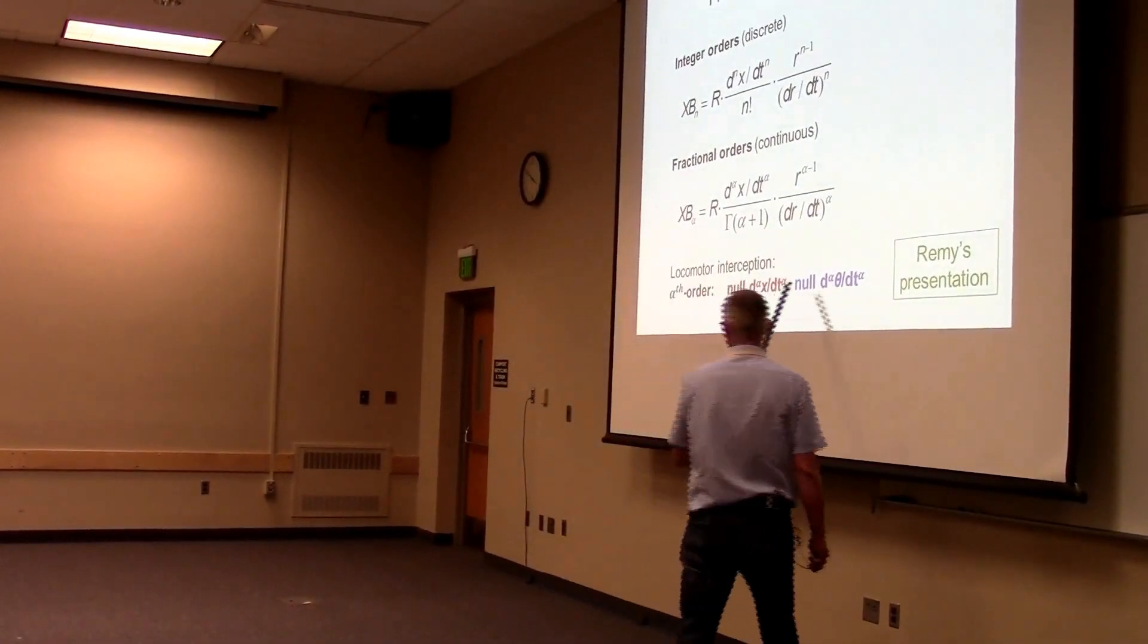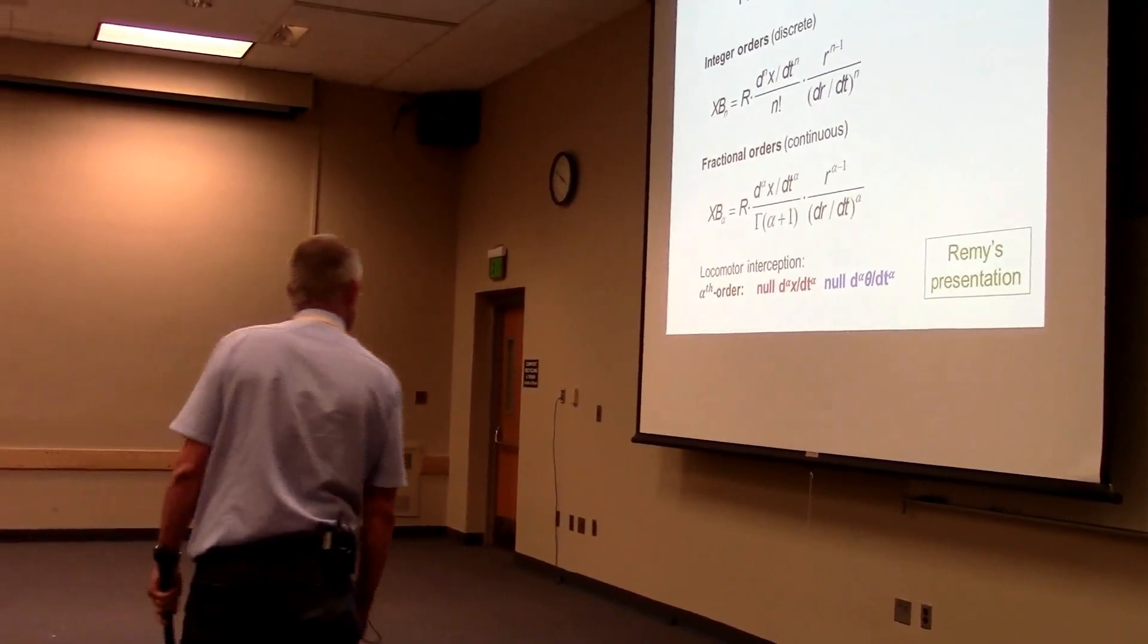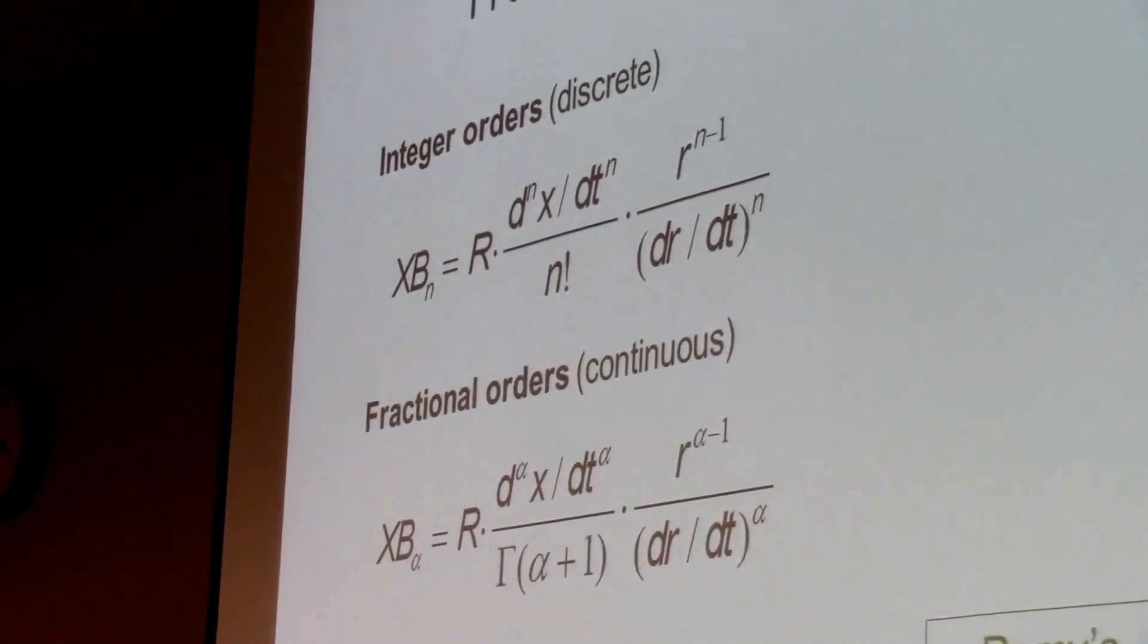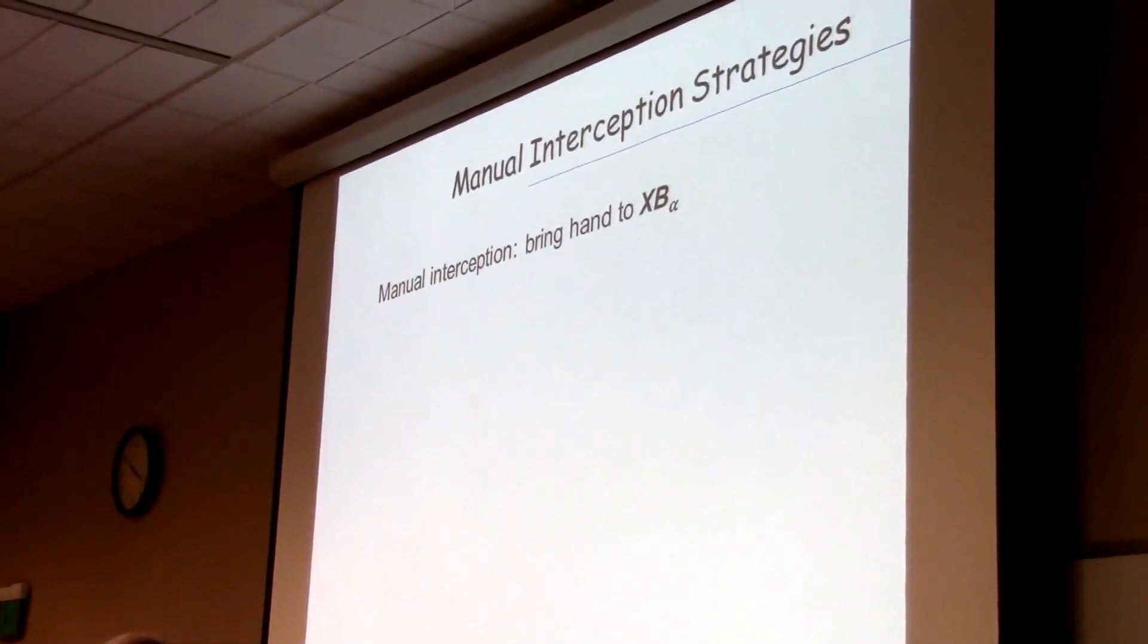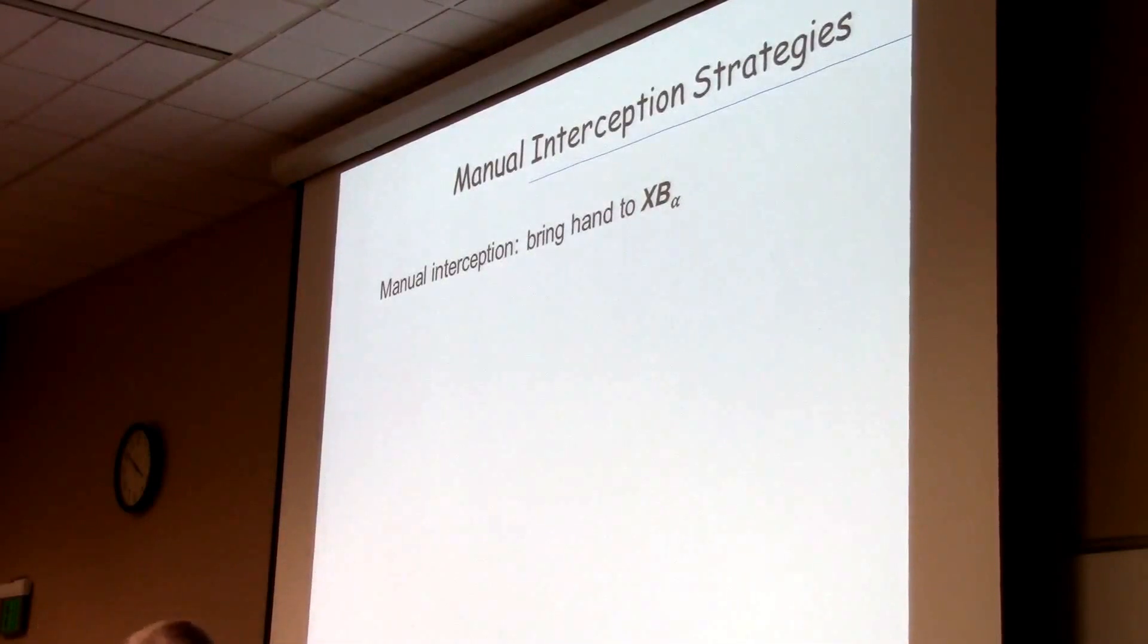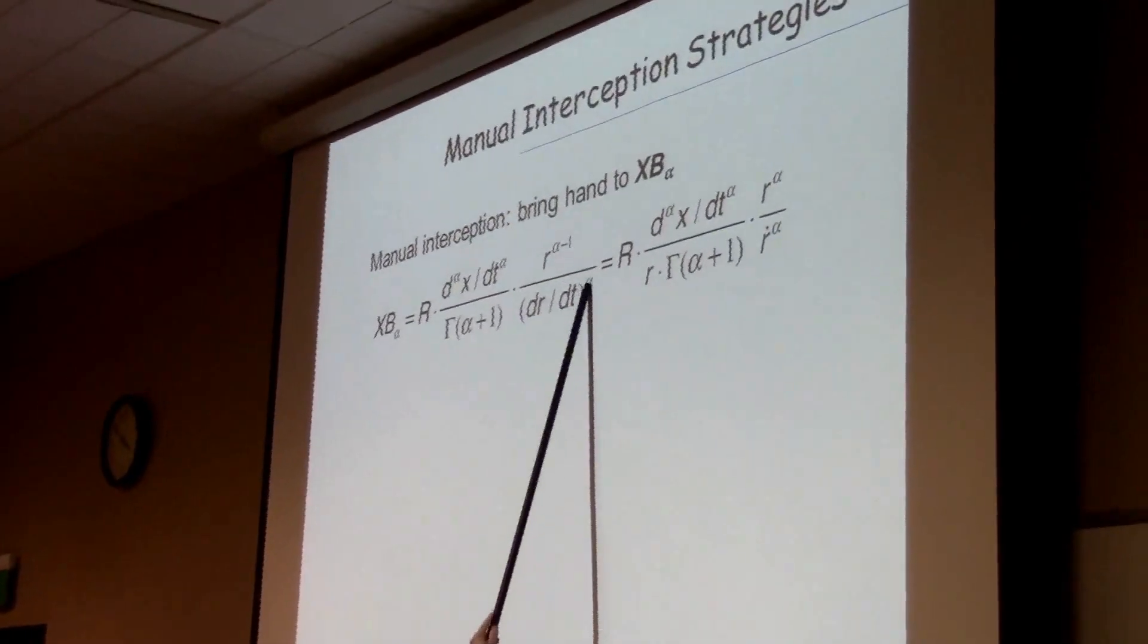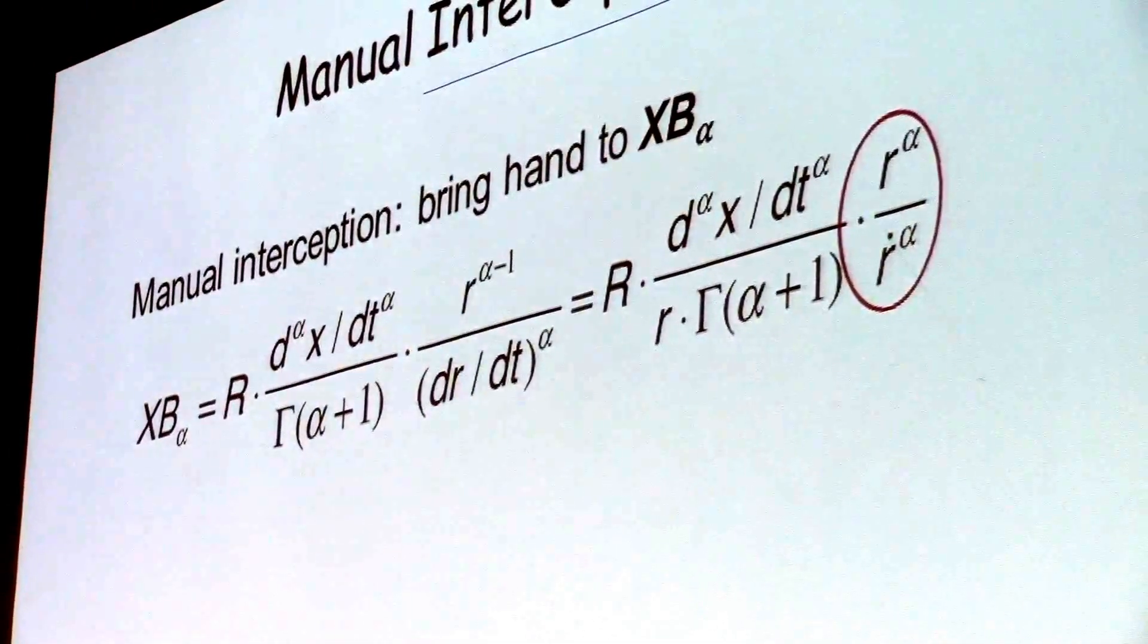Now, the empirical data that we have and to which we fit in locomotor interception, a model that we're proposing. The whole thing, the message basically is, we think that this is what's happening and not that. That was locomotor interception. Manual interception. In manual interception, the point of observation does not move. And now you have to bring the hand to where the ball will arrive. So you want to bring the hand to this future arrival position, which in locomotor interception, you want to bring the eye to at that point. This is the same expression here. Here you have an R to the power alpha minus 1 and its derivative alpha. Just put one R there, and pops up a tau expression.